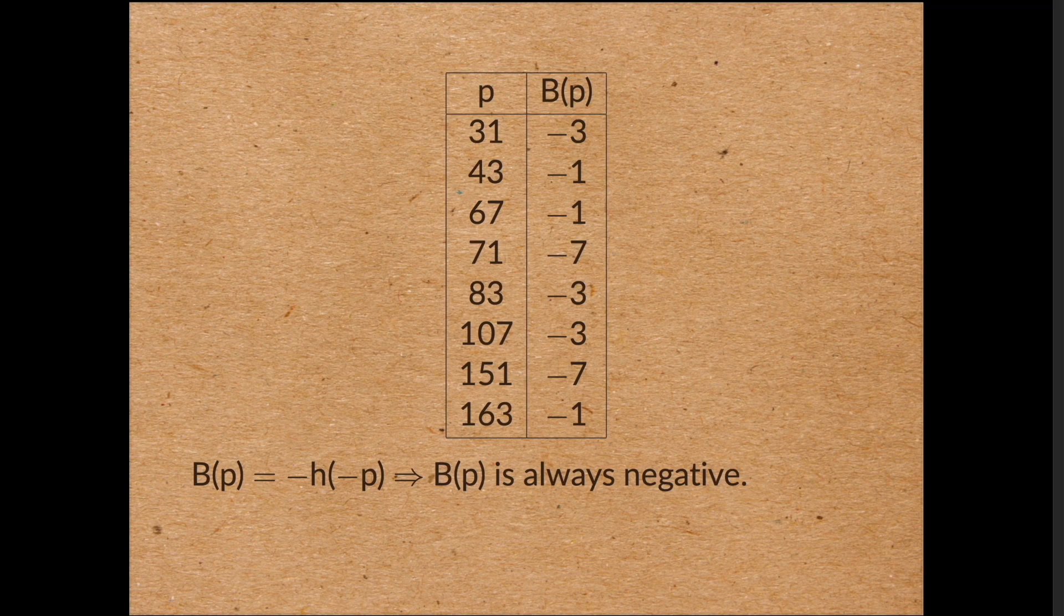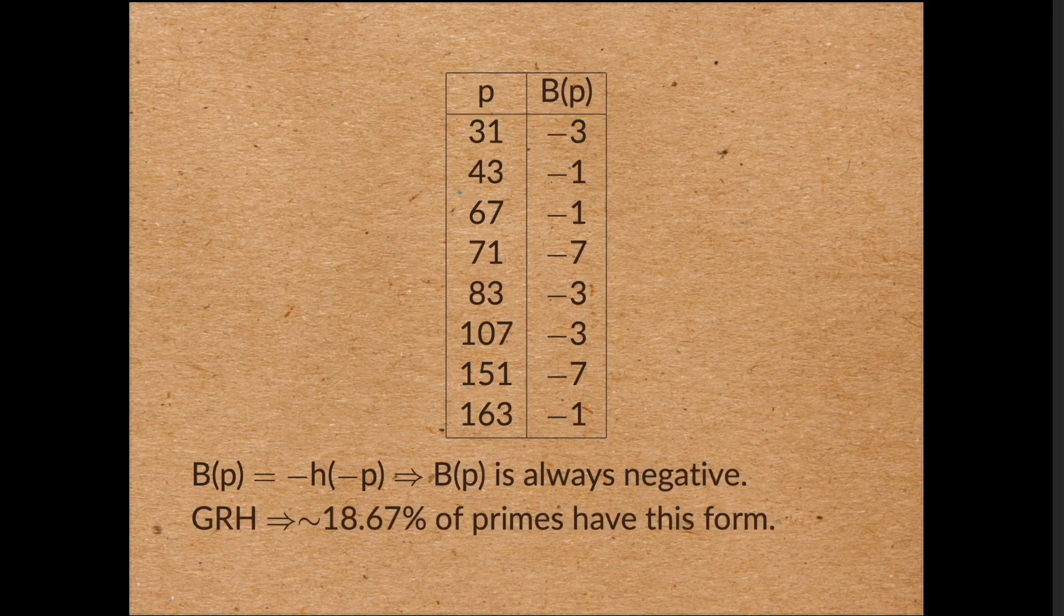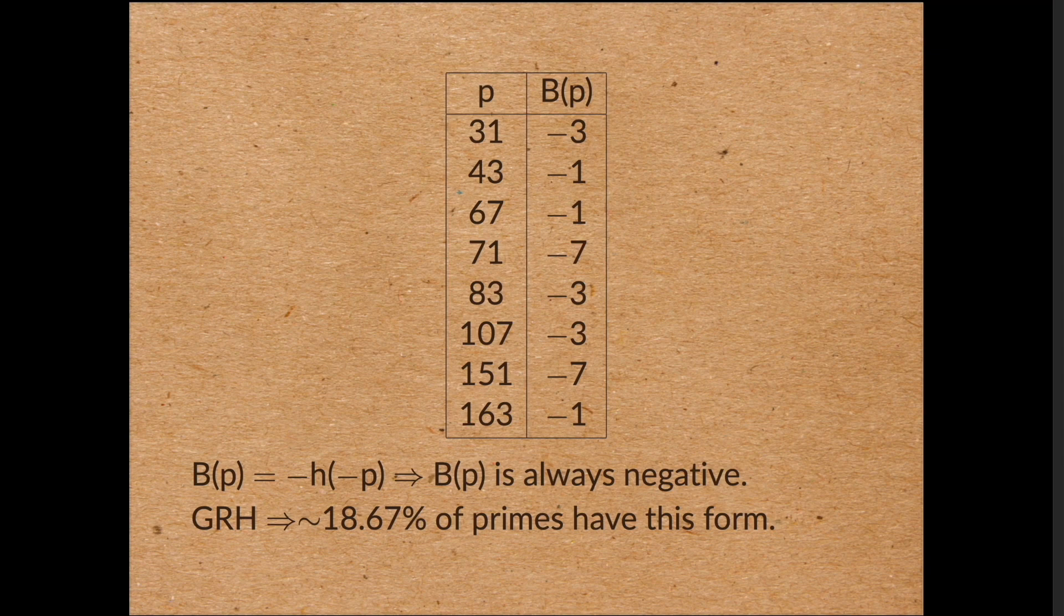So how many primes have both these properties? From this list, there seem to be quite a few small primes. But at the moment, we don't know how to prove that there are infinitely many. However, if we assume the Riemann hypothesis, or more accurately, the generalized Riemann hypothesis, then we can compute the exact proportion of primes that have this property. In fact, a little bit over 18% of primes are of this form.